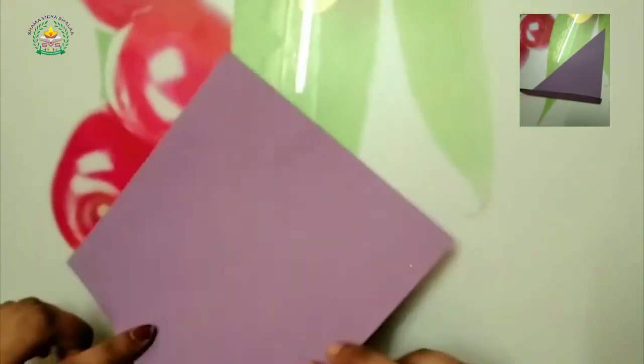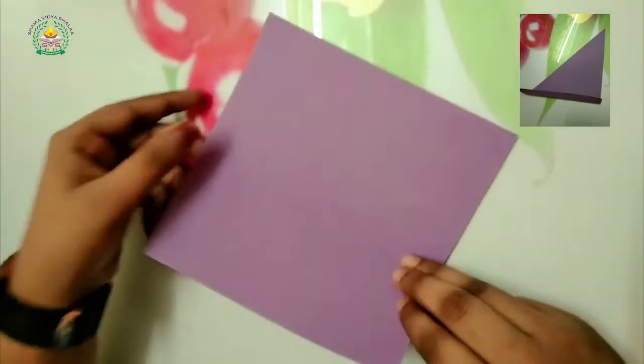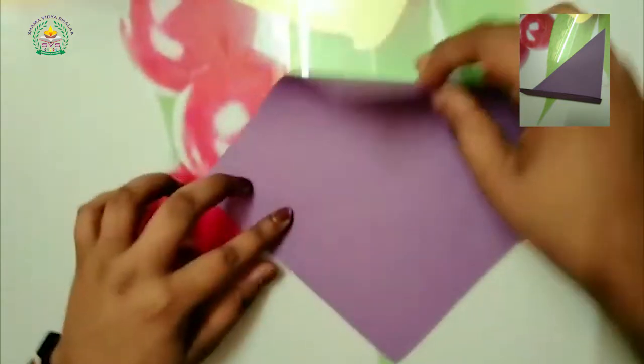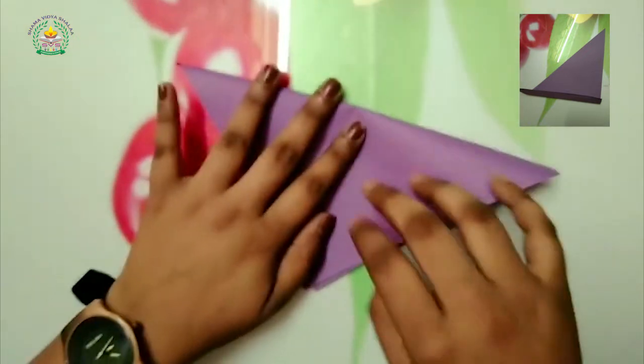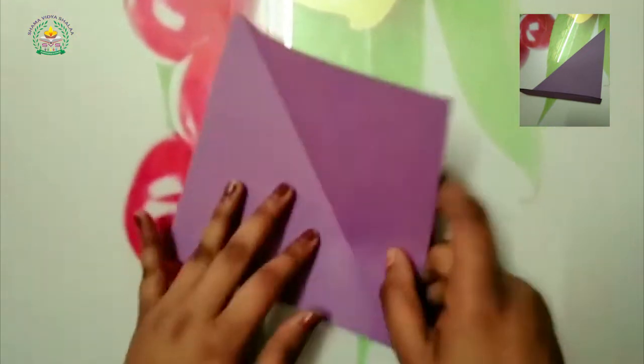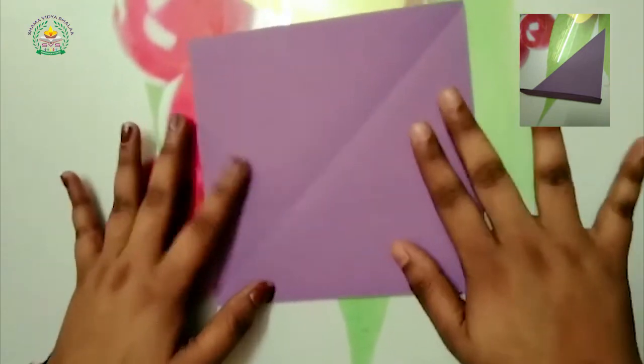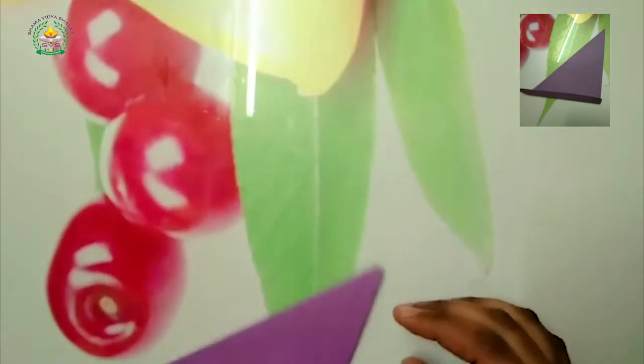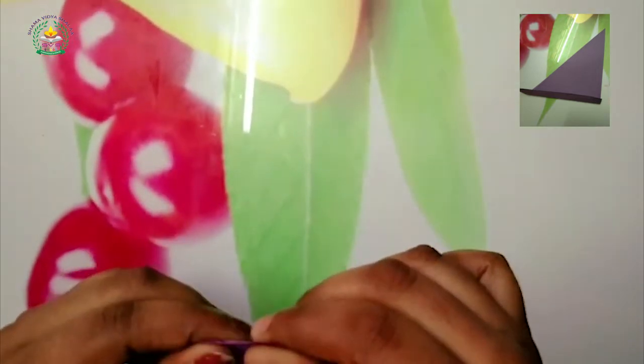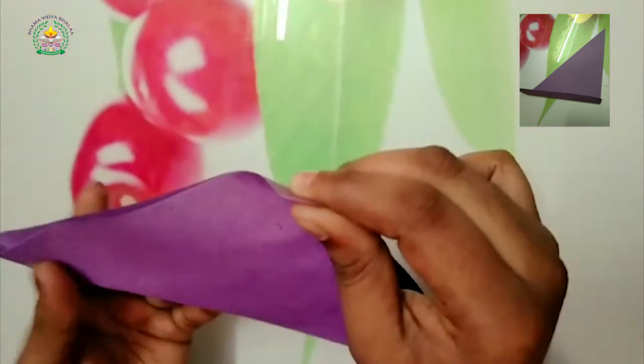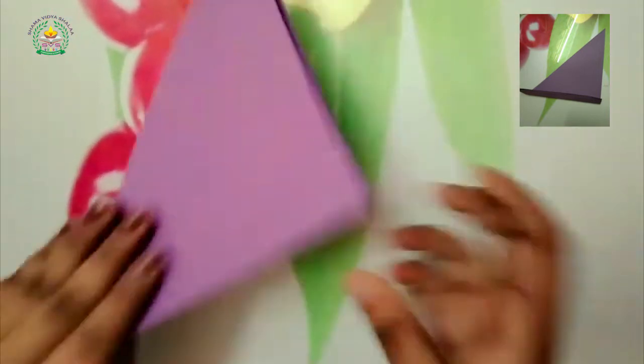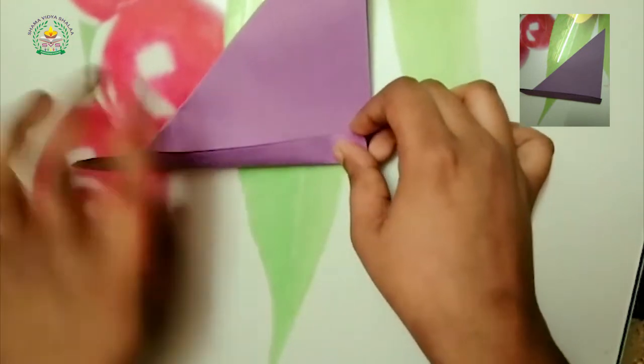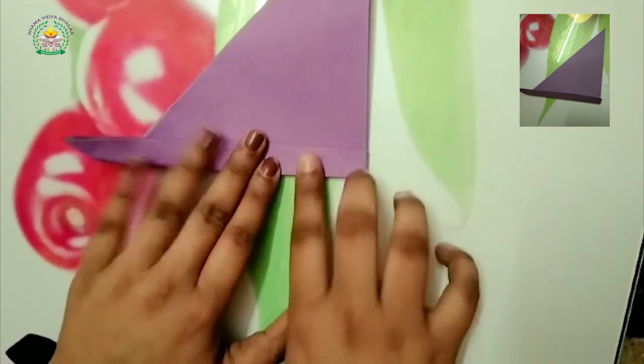So now I am going to do a boat. Boat is very easy and simple. So just fold it and then fold it like this. It should be equal. Then down, just fold it like this.